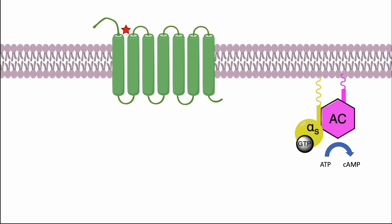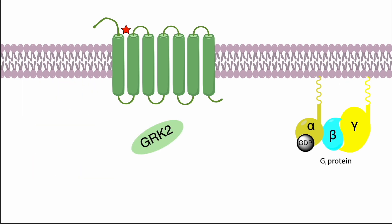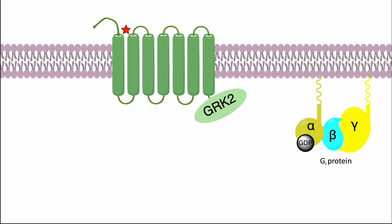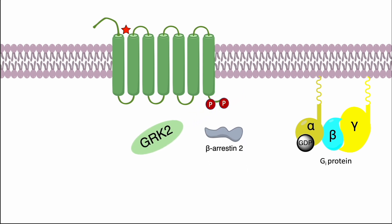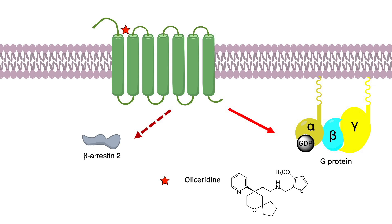cAMP is a secondary messenger that moves into the cell's cytoplasm and carries the signal from the cell membrane into the cell itself. Signaling of the mu-opioid receptor is primarily transduced through Gi proteins to inhibit cAMP production. On the other hand, activation of the opioid receptor also leads to receptor phosphorylation by protein kinases. This triggers binding of beta-arrestin-2 to the receptor, which sterically inhibits further G-protein activation and results in the activation of other downstream signaling pathways.